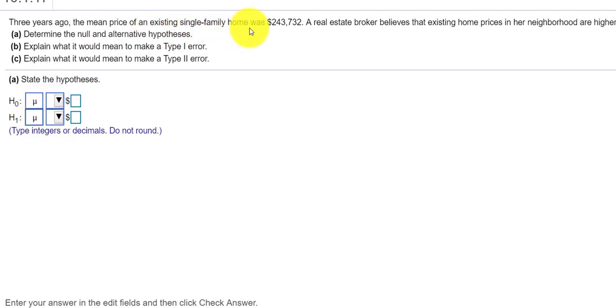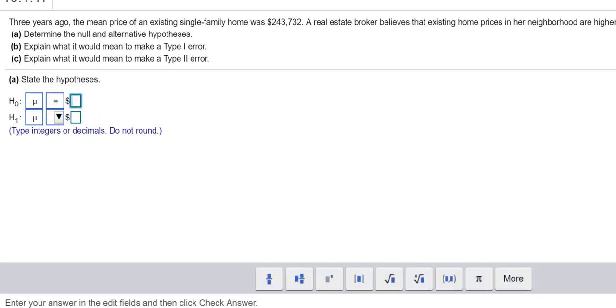And the mean price was $243,732. So your null hypothesis is always something equal to. So the mean would be equal to $243,732. That's the null hypothesis.